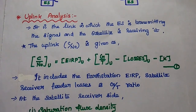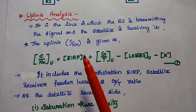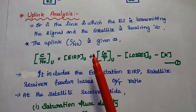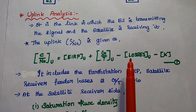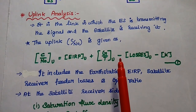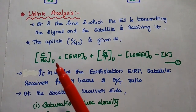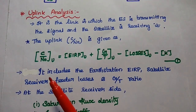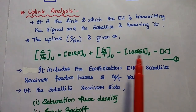In uplink analysis, we are going to use the parameter C by N0. The satellite link performance can be determined using the carrier to noise density ratio. For uplink, the uplink carrier to noise density ratio is given as: C/N0 = EIRP_U plus G/T_U minus losses minus K.